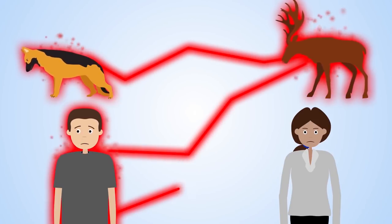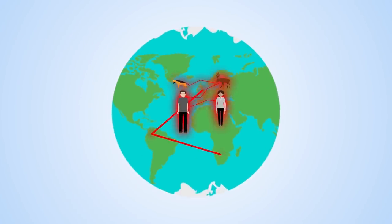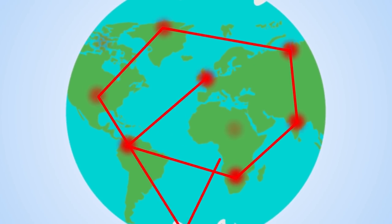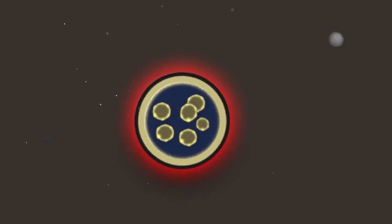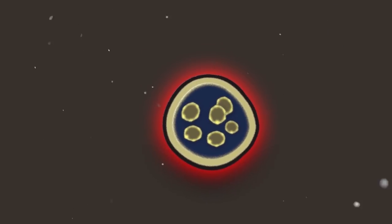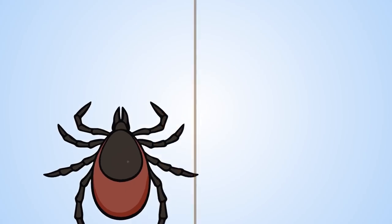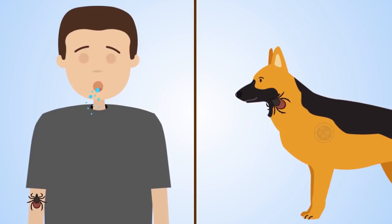Infectious diseases are a growing global problem for human and animal health. The pathogens that cause these diseases can be transmitted by vectors, for example ticks, or passed on in other ways.